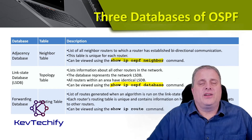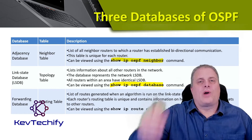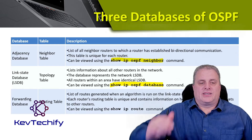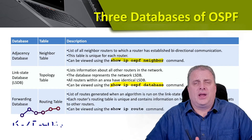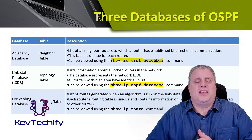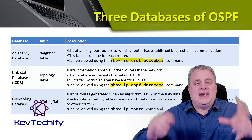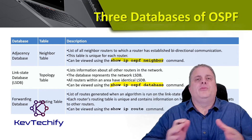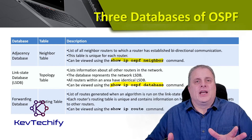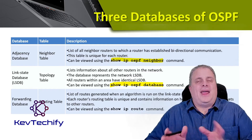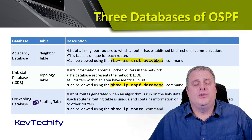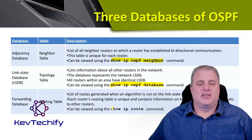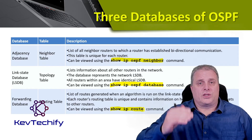The third and final database is the forwarding database — this is the routing table. It's a list of routes generated through the algorithm, based on the link state database. Each routing table is unique to that router because of the different neighbors and different paths leading from that router to other destinations. You can view this with the show IP route command, which shows all the routes OSPF has learned.